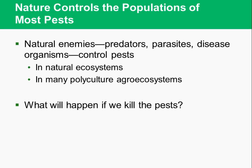Nature controls the population of most pests. In natural ecosystems and polyculture agro-ecosystems, natural enemies such as predators, parasites, and disease organisms control pests. For example, the wolf spider — one of the world's 30,000 known spider species — kills far more insects every year than humans do using chemicals. Unfortunately, when we douse areas with pesticides, we accidentally kill the predators of pests, upsetting the natural population checks and balances. We then have to create new pesticides to protect monoculture crops, tree plantations, lawns, and golf courses from insects and other pests that nature would otherwise control for us.